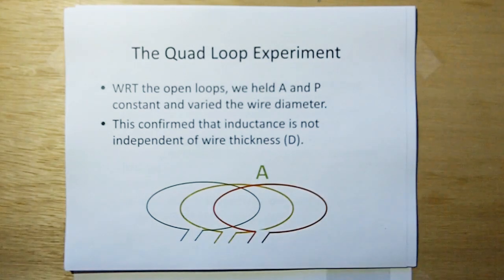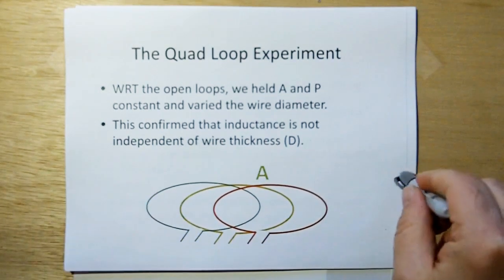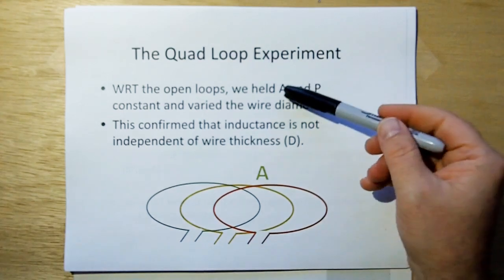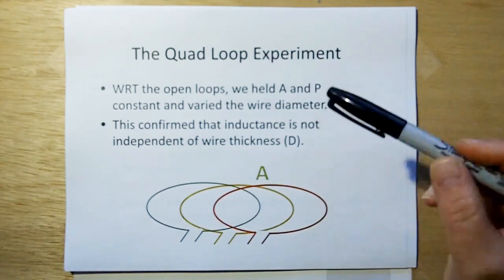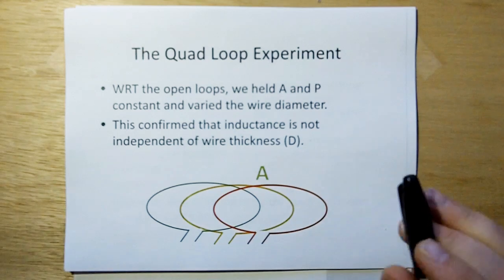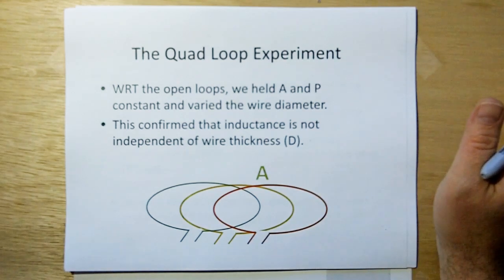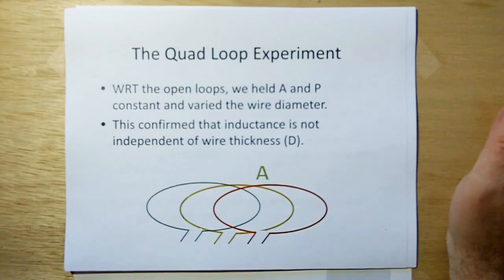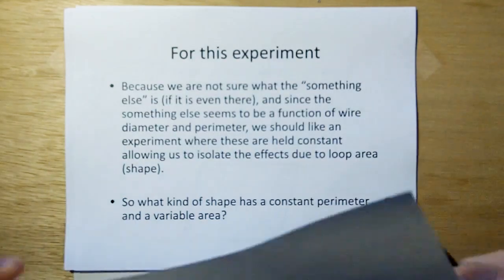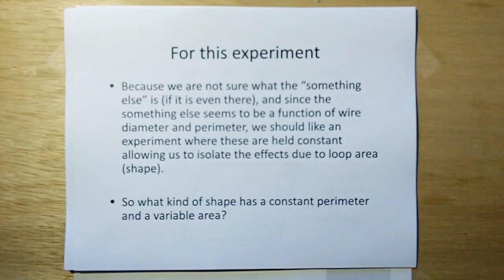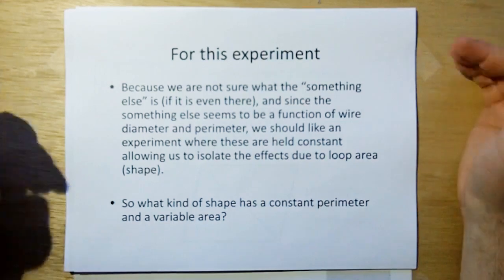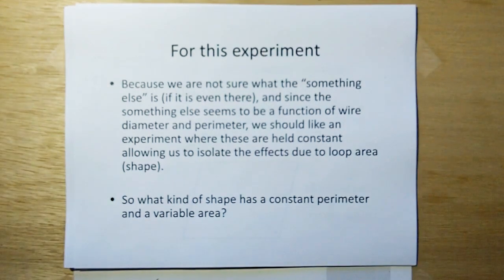And what we learned from the quad loop experiment, with regard to the open loops, not the collapse loop, is that we held the area and the perimeter constant and varied just the wire diameter. This confirmed that inductance is not independent of wire thickness, as classical theory tries to explain with the internal inductance derivation. So because we're not sure what the something else is, even if it's really there, and since the something else seems to be a function of wire diameter and perimeter, we should like an experiment where these are held constant, allowing us to isolate the effects due to loop area or shape.